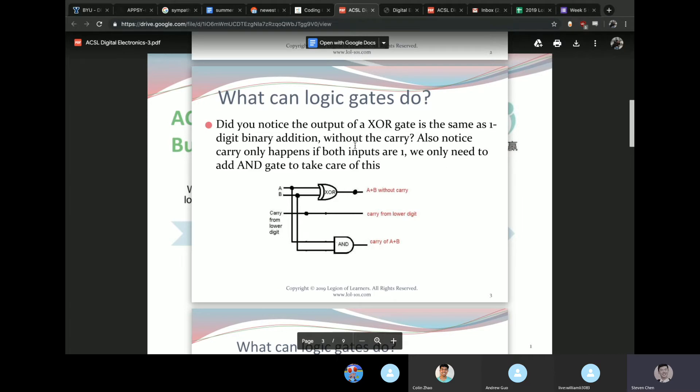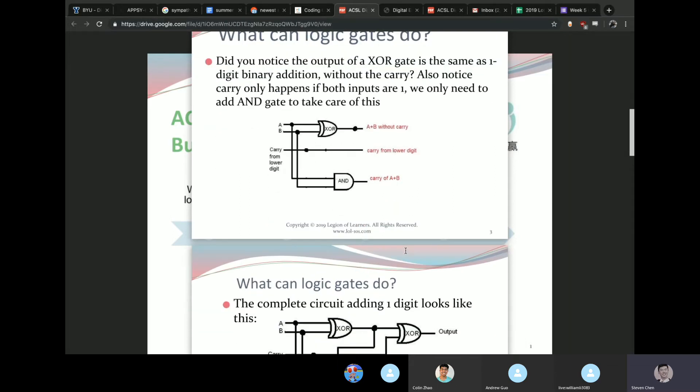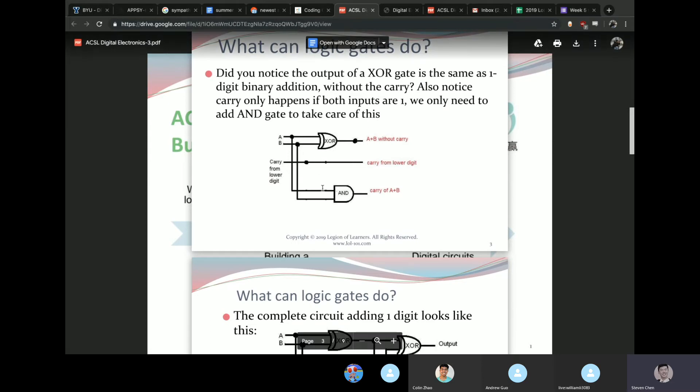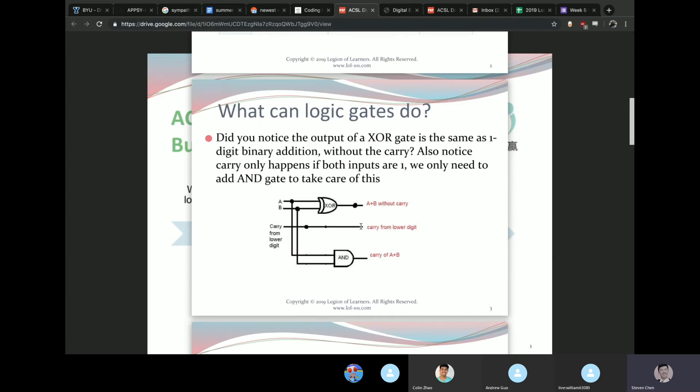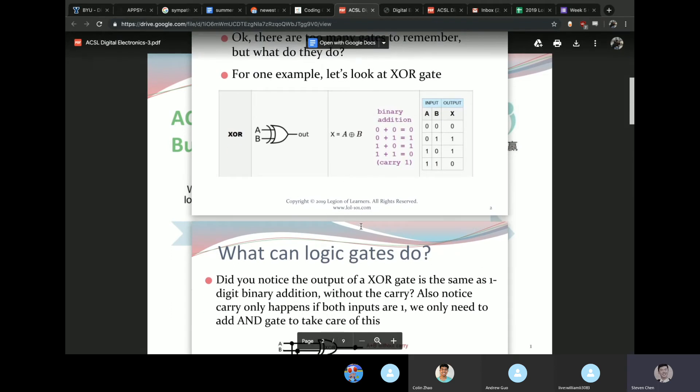Basically the carry only happens if both inputs are one, which means you just need to add an AND gate. This looks quite complicated, but really it just means that you get rid of the XOR, this becomes A plus B without the carry, otherwise it carries to here, which becomes just a regular AND. If you're just familiar with the inputs and outputs of each gate for now, you should be fine.